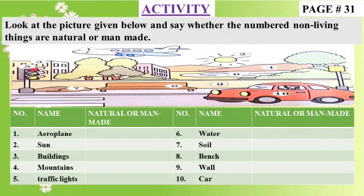Number 1 is aeroplane — aeroplane is a man-made non-living thing. Number 2 is sun — sun is a natural non-living thing.